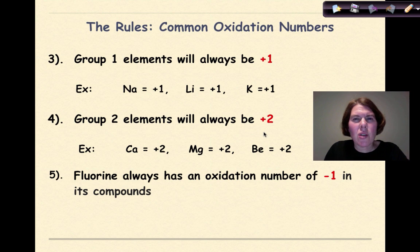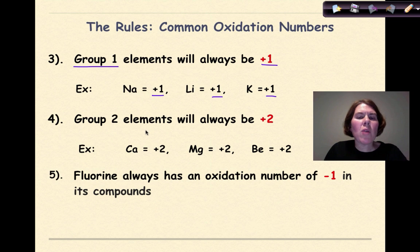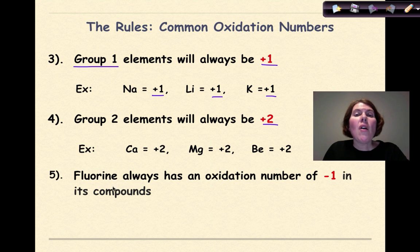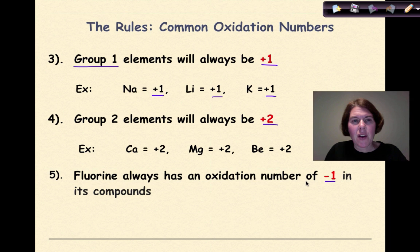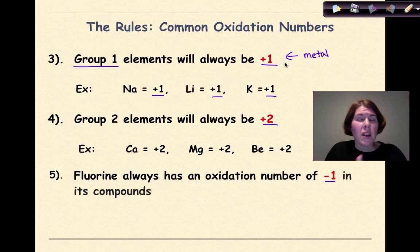Some common oxidation numbers that always repeat: any element in Group 1 will always have a charge of plus 1 — sodium, lithium, and potassium, for example. Group 2 elements will always be plus 2 — calcium, magnesium, and beryllium. Fluorine is the non-metal that will always have an oxidation number of minus 1 in its compounds, definitively. Note that while hydrogen is affiliated with Group 1, it is its own special case as a non-metal.